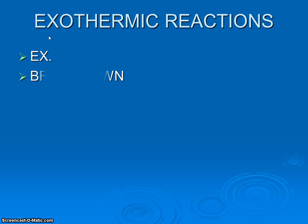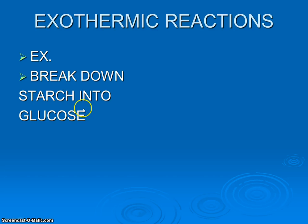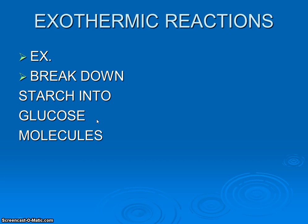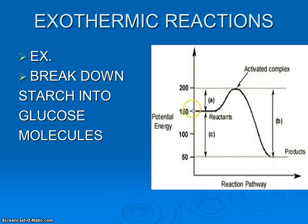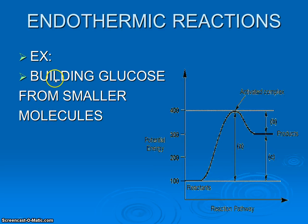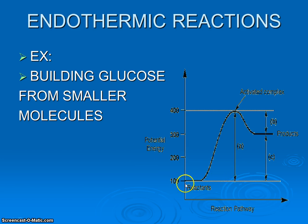A quick example: exothermic is breaking starch into glucose. Remember from our third video, starch is a huge macromolecule carbohydrate made up of a bunch of glucose molecules, and we're breaking that down, actually releasing energy — the products have lower amounts of energy. And endothermic is the opposite: building glucose from smaller molecules. We'll look at that later when we get to ecology, but essentially we're taking smaller reactants and building a larger molecule.